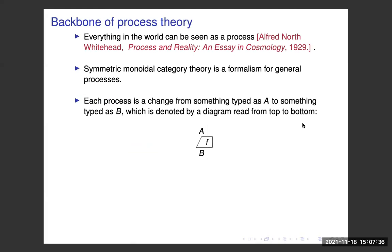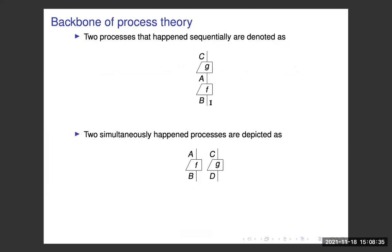I want to give a rough description of process theory. Everything in the world can be seen as a process, according to Whitehead. There is a mathematical framework — the symmetric monoidal category — which can be seen as a formalism for general processes. Each process is a morphism, a map from something typed as A to something typed as B, denoted by a diagram.